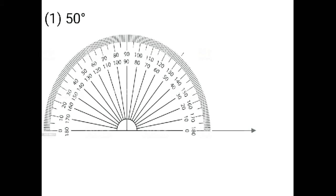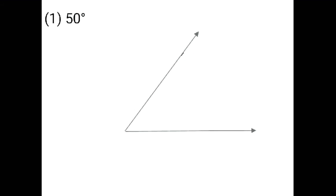The protractor, where you placed on the starting point of the ray, and the 50 degree which you marked — you have to draw this other ray, you have to join this ray like this. You can name this angle ABC. You can give any 3 points on your own.